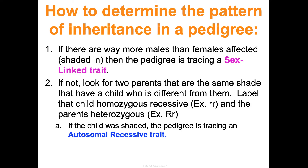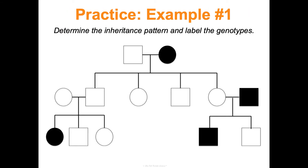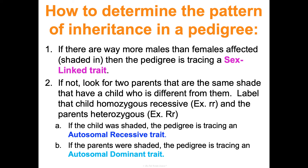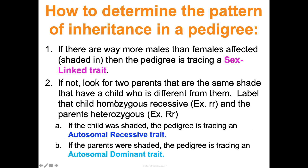If the child is the one who is shaded in that scenario, it's an autosomal recessive trait. If the parents are shaded and the child is not, it's autosomal dominant. Let's apply this: in our example, two girls and two boys are affected — not more males — so this is autosomal. Then we find two unshaded parents with a shaded child, label the parents heterozygous and the child homozygous recessive, confirming autosomal recessive.